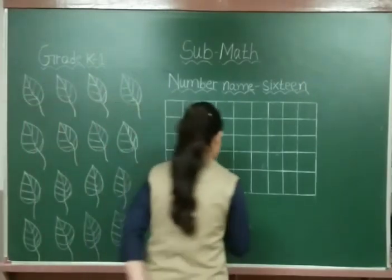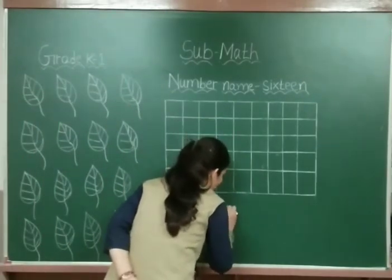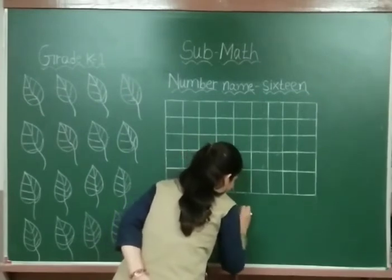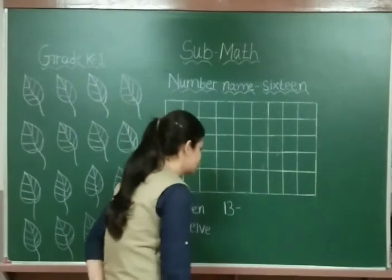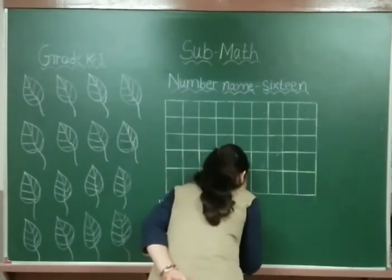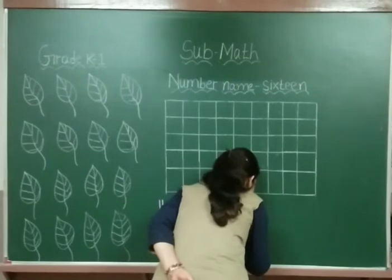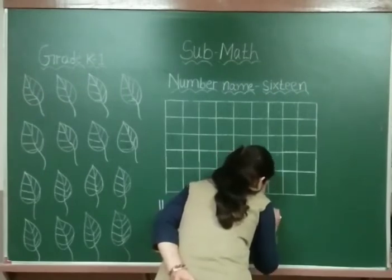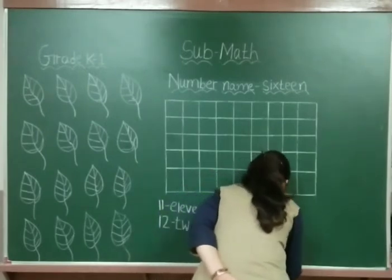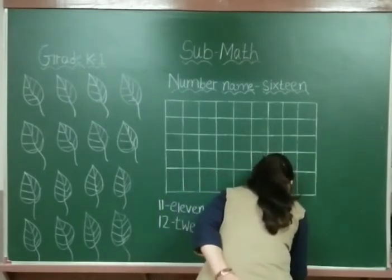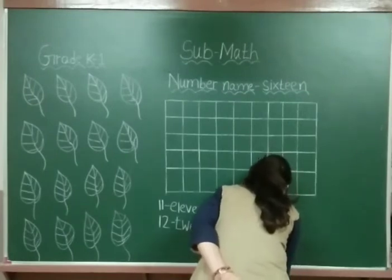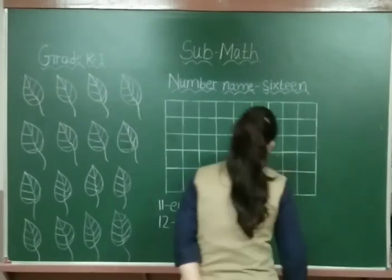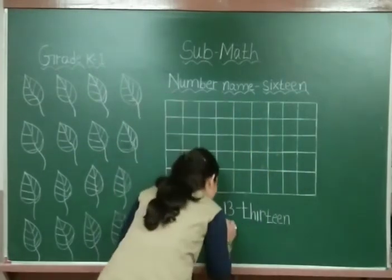Now this is number name 13. This is 1, 3, 13. What is the spelling of 13? T-H-I-R-T-E-E-N, 13. What is the spelling of 13? T-H-I-R-T-E-E-N, 13.